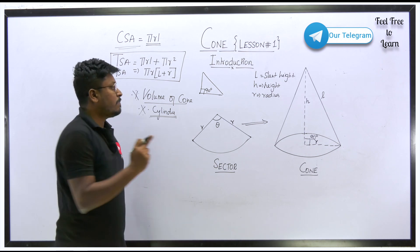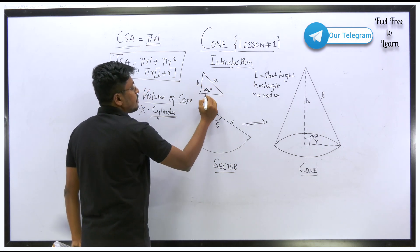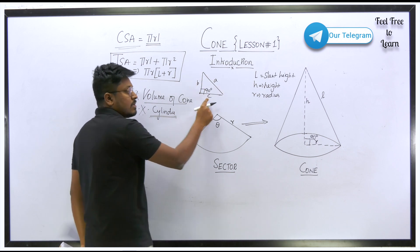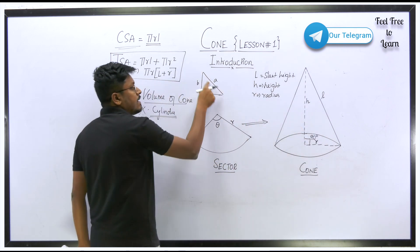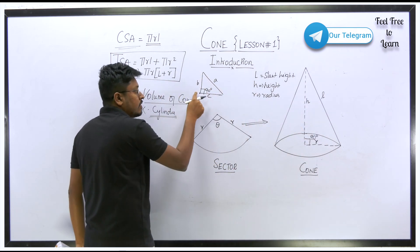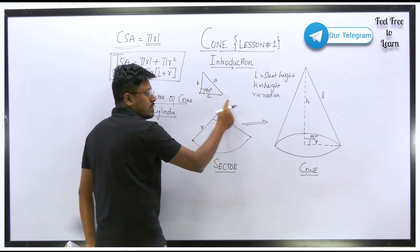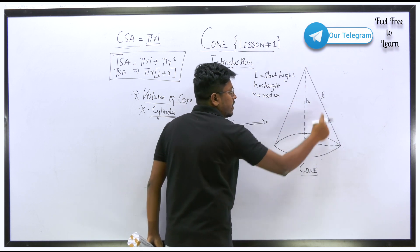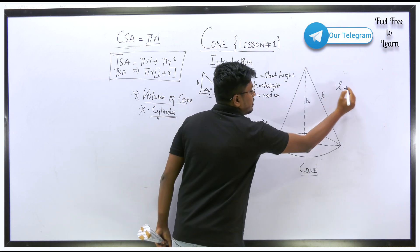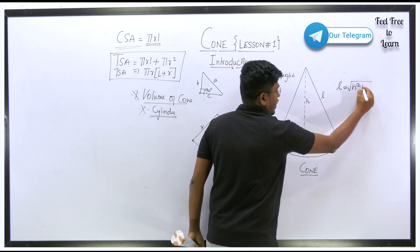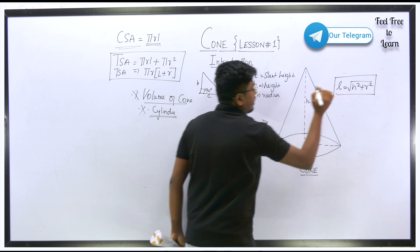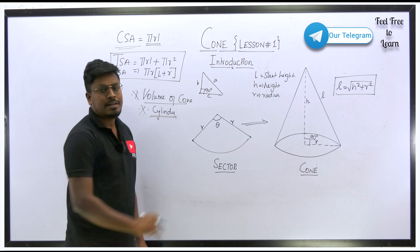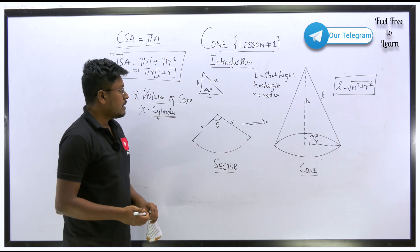By Pythagoras theorem, if we label the sides as a, b, c, then a = √(b² + c²). Applying this to the cone: l is the slant height (hypotenuse), h is the height, and r is the radius. Therefore, l = √(h² + r²). If you need to find h or r, you can derive them from this same formula.